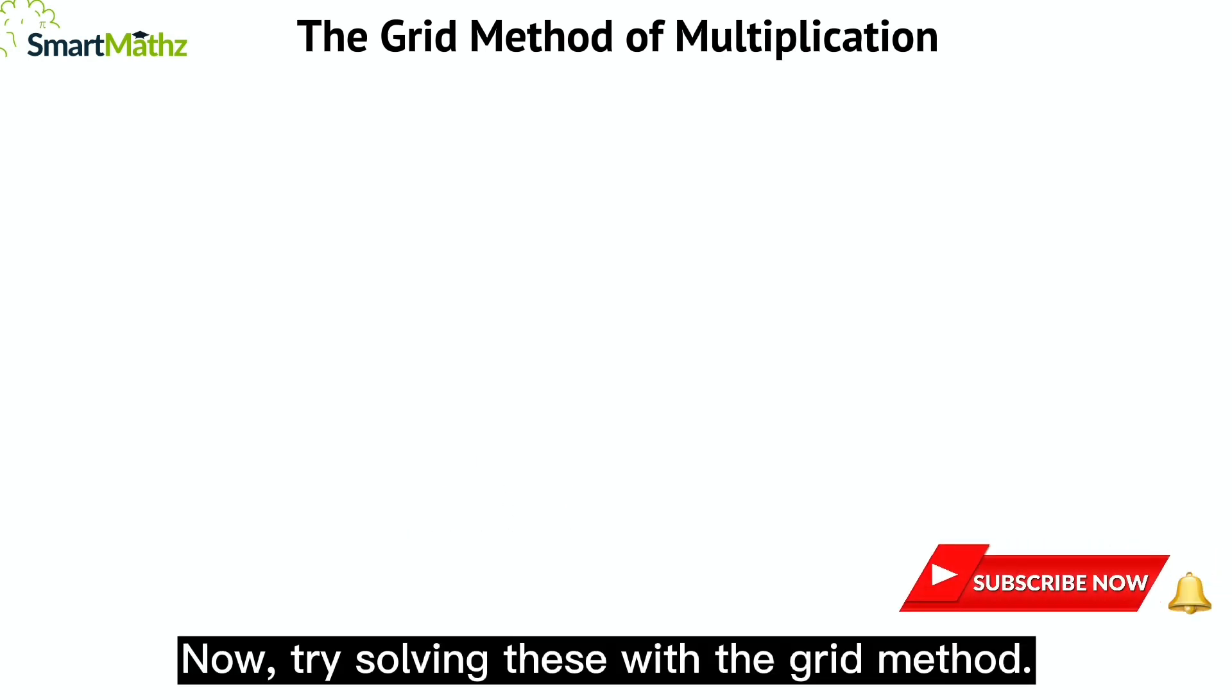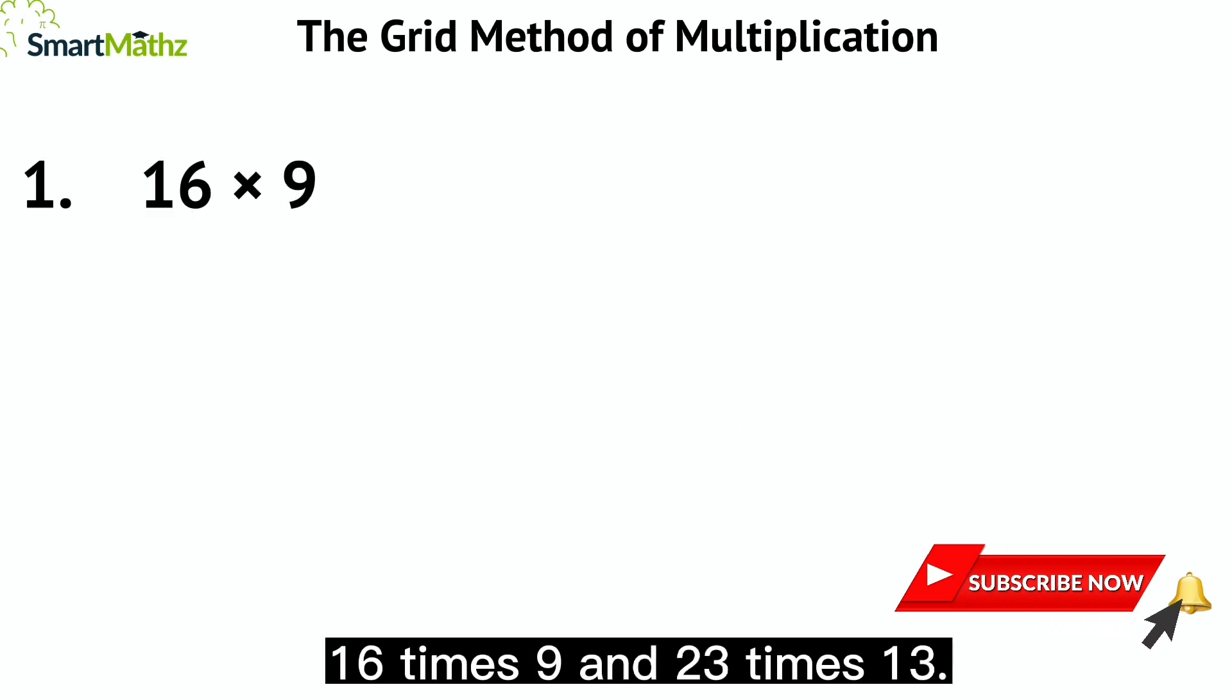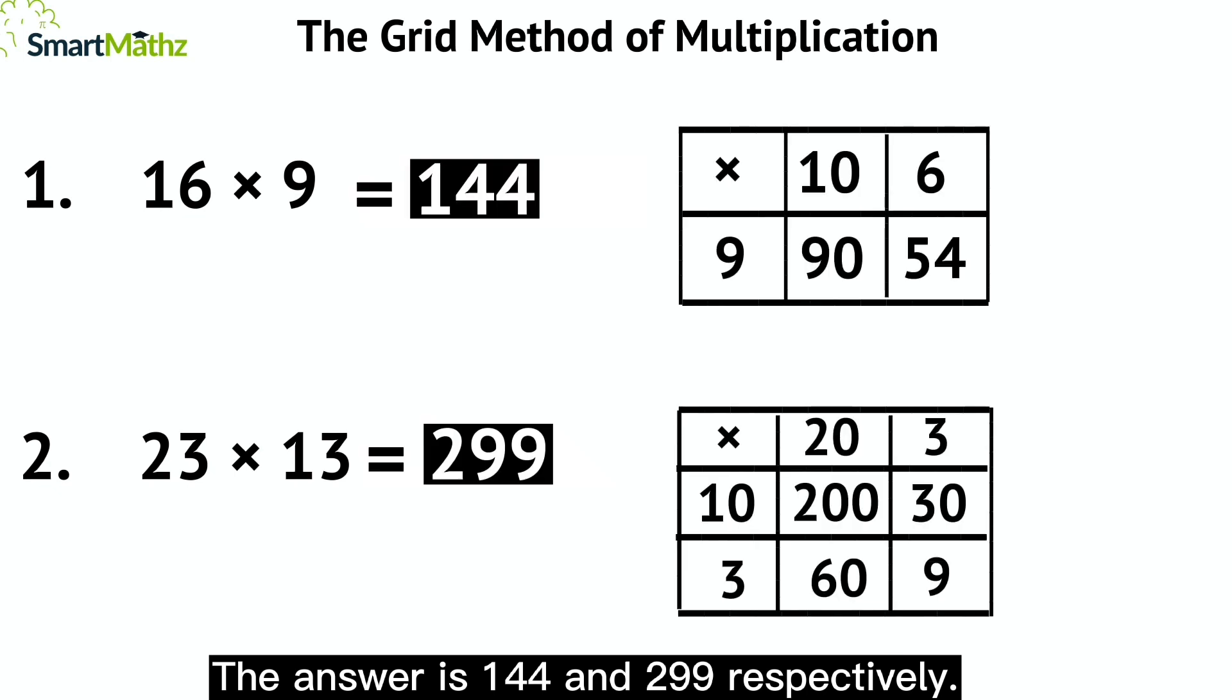Now, try solving these with the grid method: 16 times 9 and 23 times 13. The answers are 144 and 299 respectively.